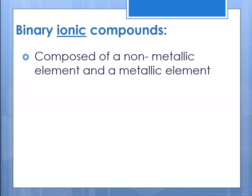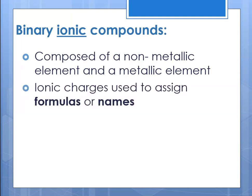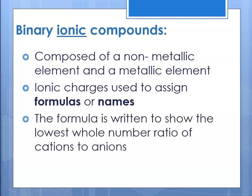Binary ionic compounds are composed of a non-metallic element and a metallic element, and ionic charges are used to assign both the formula and the names. The formula is written to show the lowest whole number ratio of cations to anions. Remember, compounds are neutral, so you always have to write something that reflects a neutral compound.